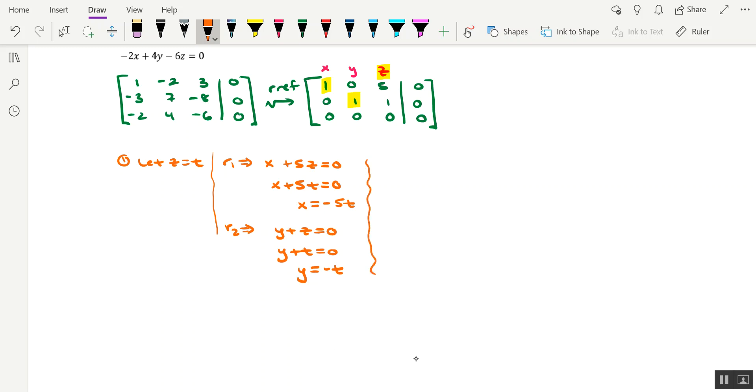So our parametric equations would be as follows: x equals negative 5t, y equals negative t, and z equals t. Now since there's only one parameter involved in these parametric equations, this would actually correspond to a line through the origin.